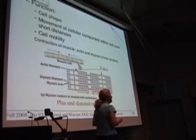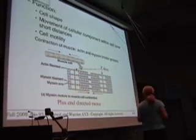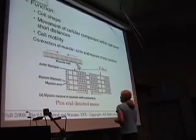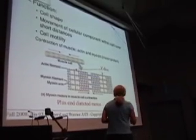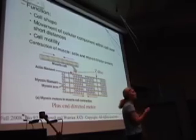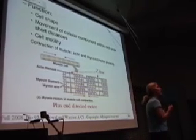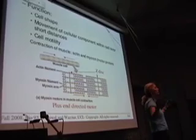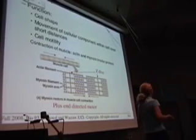We know that actin is involved in cellular movement, different types of cellular movement, and it's important for cell shape. It's also important for movement of cellular components within the cell, but over short distances. Anything that's going over long distances actually uses microtubules, and we'll talk about that in depth.